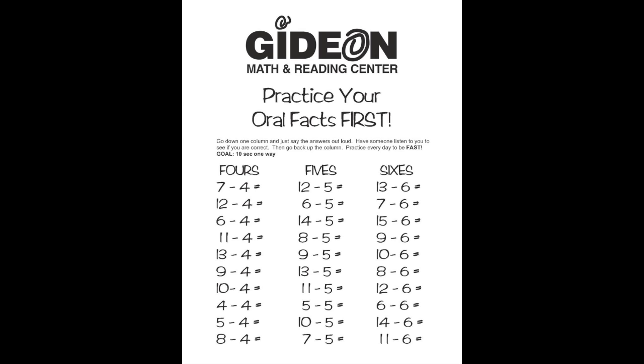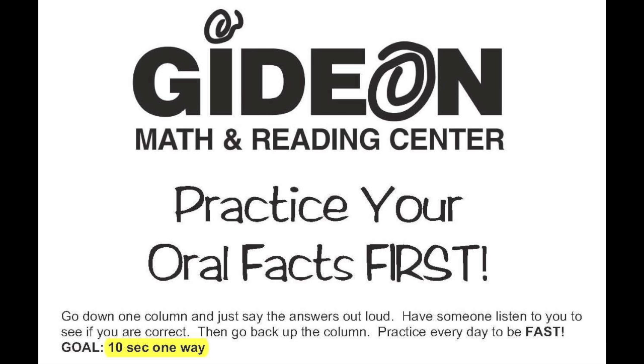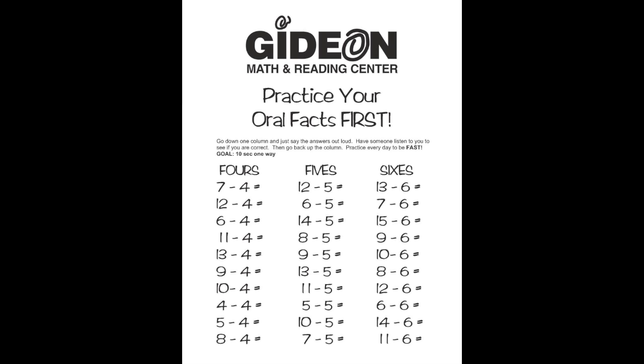To practice oral facts, go down one column and just say the answers out loud. Have someone listen to you to see if you are correct. Then go back up the column. Practice every day to be fast. Your goal is to go one way in 10 seconds or less. Do all 3 columns.